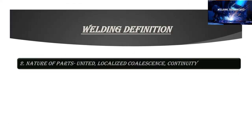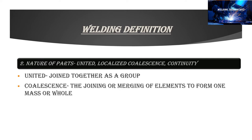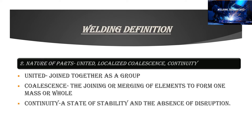The second component in the definition of welding is the nature of the parts. 'United' means that the parts join together with each other as a group. 'Coalescence' means that the parts merge together as a single mass and behave as a whole.